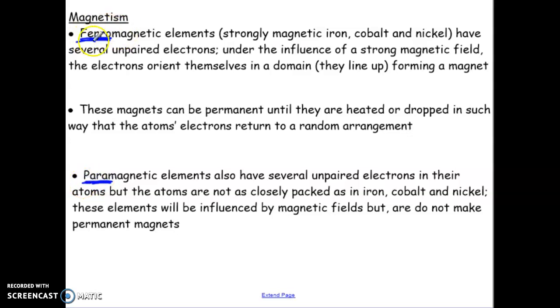So, a ferromagnetic element, there's actually only three elements that fall under that category. We have iron, cobalt, and nickel. So, these are elements that have a very strong magnetic field. So, let's talk about what actually creates that magnetic field. And the key to this is unpaired electrons.